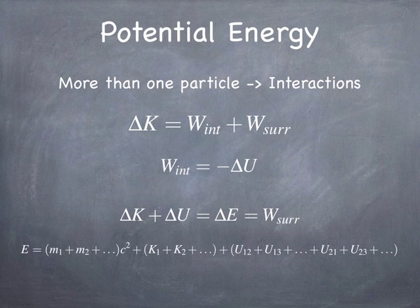So the total energy becomes the total rest energy of all the particles, plus the total kinetic energy of all the particles in the system, plus the potential energy — the interaction energy — between all pairs of particles in the system. That includes the potential energy between particle 1 and particle 2, between particle 1 and particle 3, particle 1 and particle 4, and so on; plus the interaction energy between particle 2 and particle 3, and so on. You enumerate all pairs and add up their potential energy of interaction. Note that particles don't have interactions with themselves.